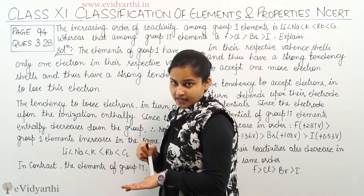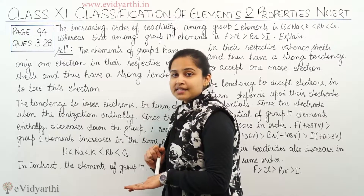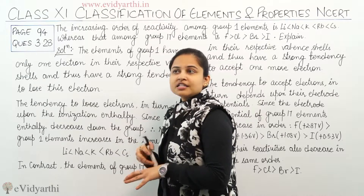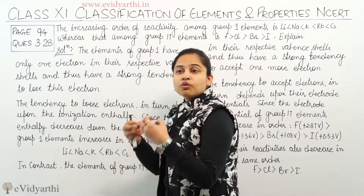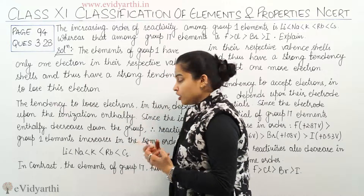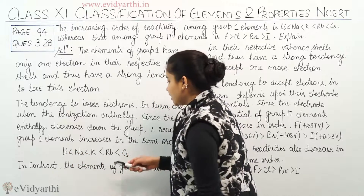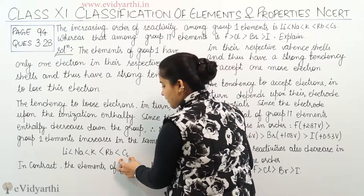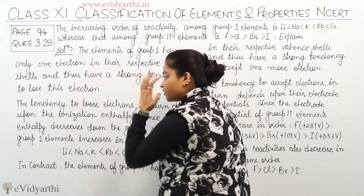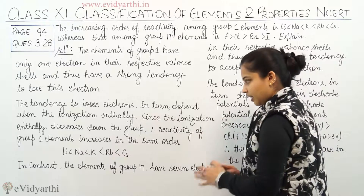So the reactivity increases in this order. The highest reactivity is of cesium, then rubidium, then potassium, then sodium, and then lithium. So this is the order of reactivity for Group 1 elements.